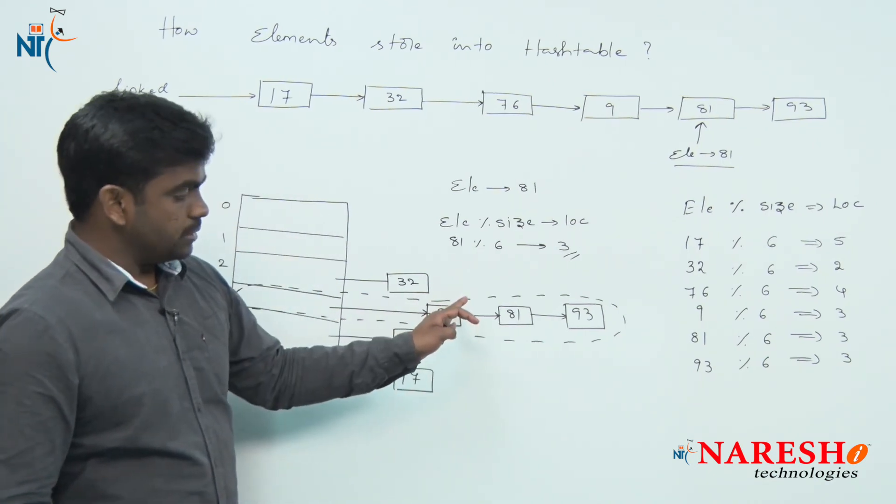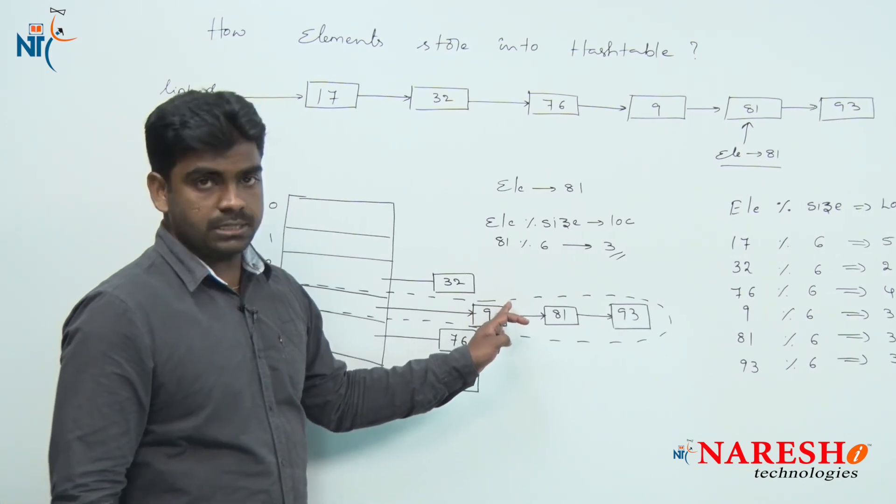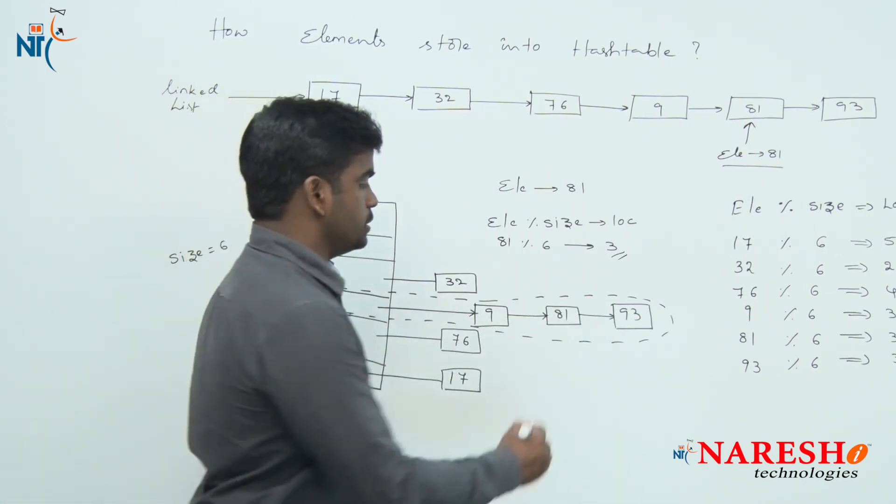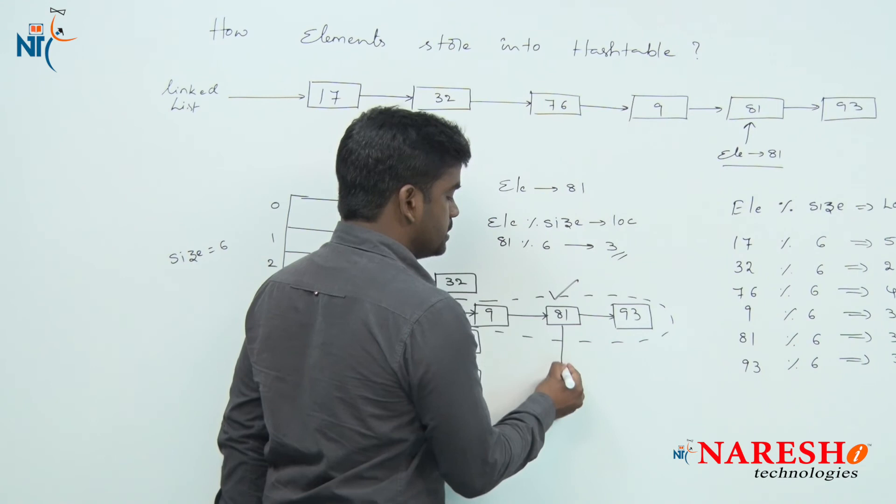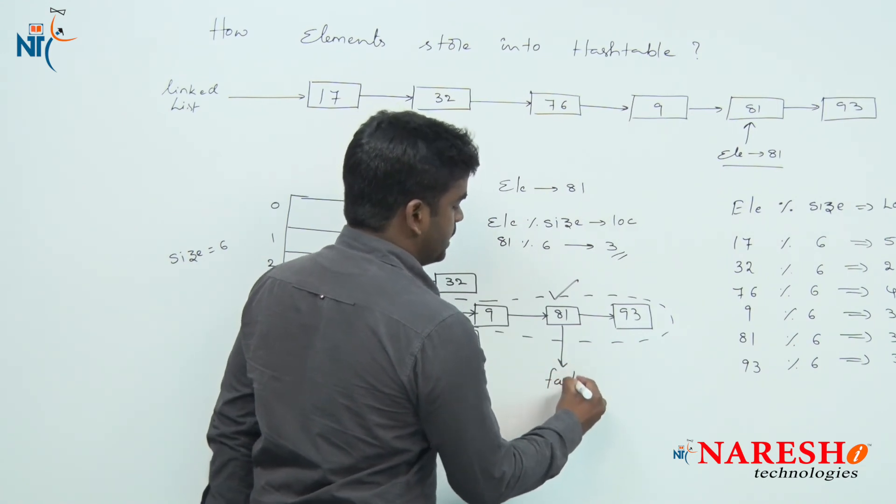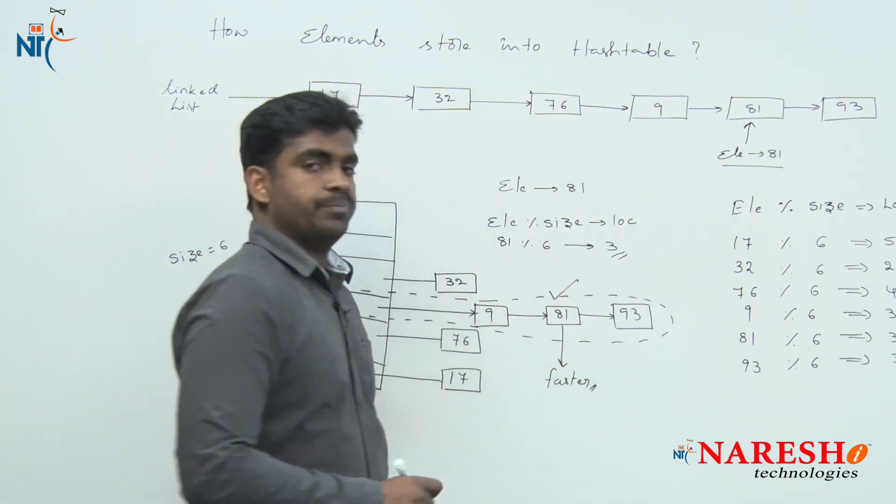First, here you will search for 81. In the first iteration it is not available, and the next location you will get it. It is a bit faster when compared with the linked list.